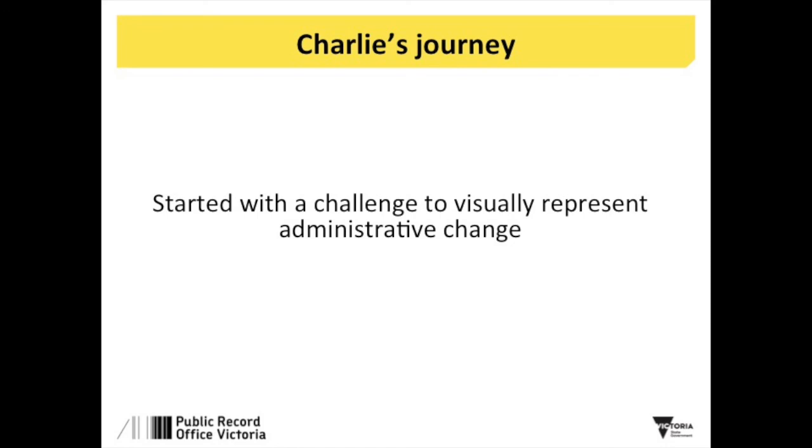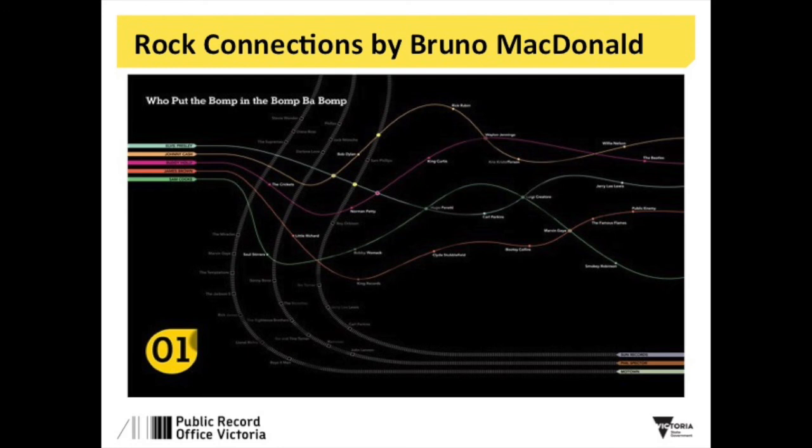That was my journey. Charlie started a similar sort of journey - he was specifically looking in 2011 for a visualization that could help him map administrative changes, machinery of government changes over time, from the colonial period in Victoria right through to the present. As anyone who knows Charlie knows, he has an unbelievable passion for music - he should actually be working for Triple R. He started looking at things called Rock Connections by Brian McDonough - it was a book, not interactive, just an image - and he was looking at various ways of visualizing music genres, artists, and relationships between bands, thinking could you use this sort of model to visualize functions and agencies?